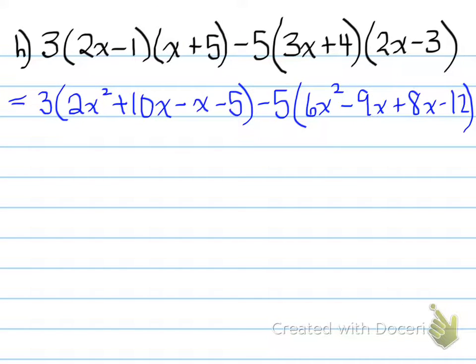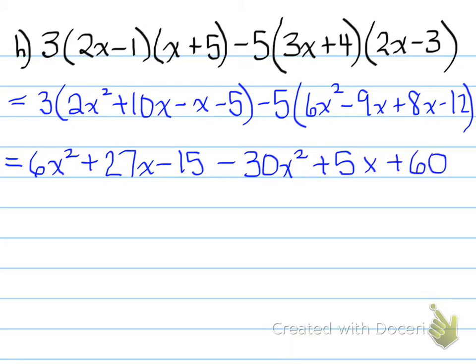Next step is multiply the 3 into this set of brackets and simplify at the same time. And multiply this minus 5 into these brackets and simplify at the same time. What do I mean by simplify? Well, 10x minus 1x is 9x. 9x times 3 is 27. So you have 6x squared plus 27x minus 15, because you're multiplying 3 times this, which is 27, and 3 times negative 5, which is negative 15. Next step is to multiply the negative 5 into the next set of brackets, keeping in mind that negative 9x plus 8x is negative x. So we have negative 30x squared minus 5x plus 60.